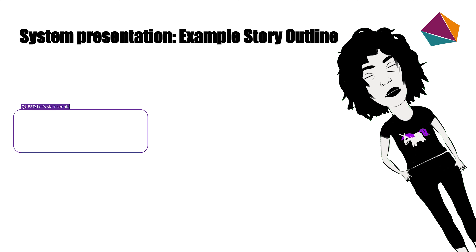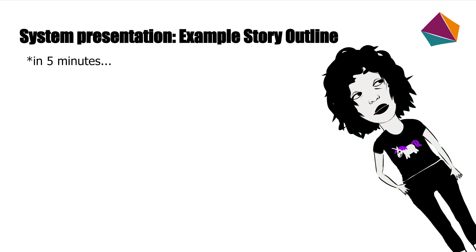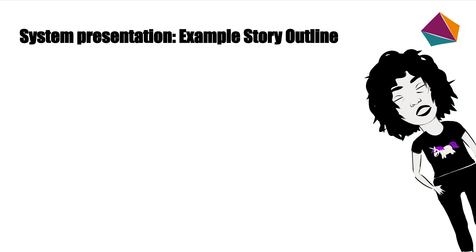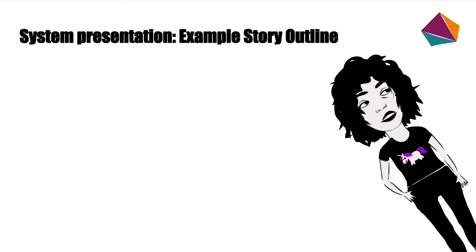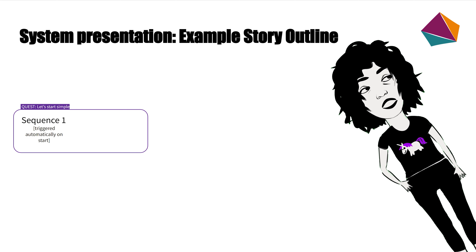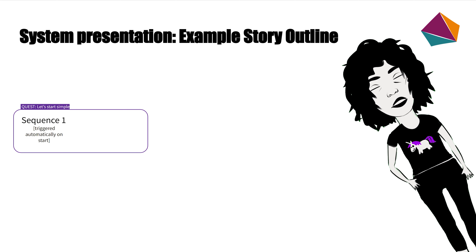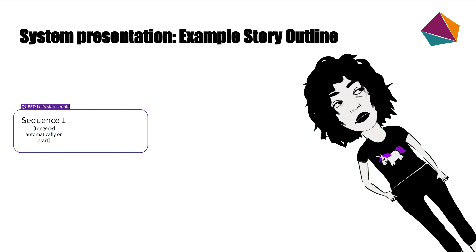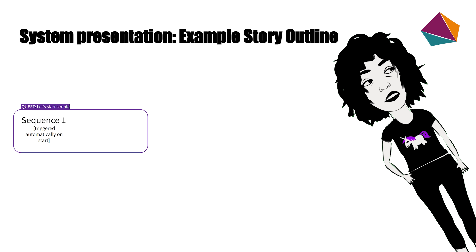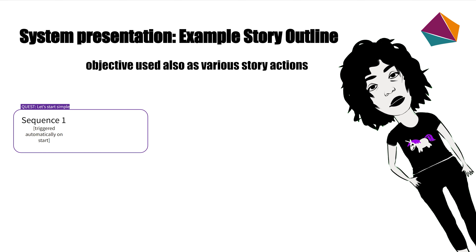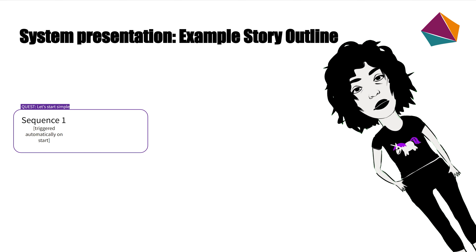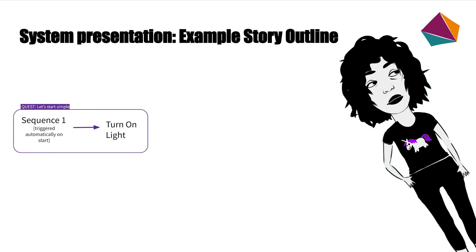Let's go through the example story outline. The story starts very simple — the first quest is even called 'Start Simple' — and it's a sequence triggered automatically on game start, on objective activation. It's also silent, so it will not be visible in the journal. It is basically a cutscene, because in my solution I use objectives not only as story objectives but also as a way to trigger certain actions in the game, like cutscenes or mini-games.